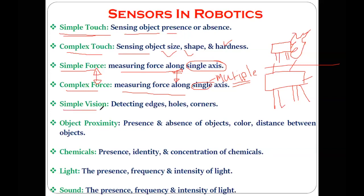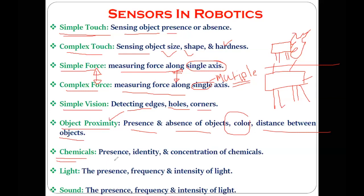Simple vision sensors are available for detecting edges, holes, and corners of different objects. Object proximity sensors detect the presence or absence of an object, its color, and the distance between objects. There are also chemical sensors that give information about the presence, identity, and concentration of chemicals, and light sensors that give information about the frequency and intensity of light.